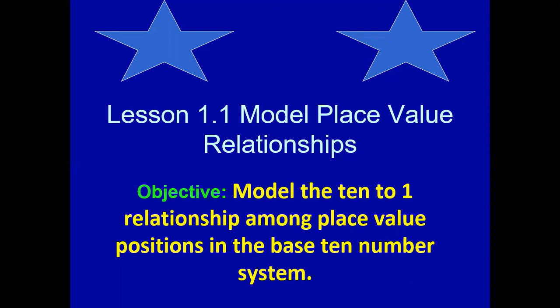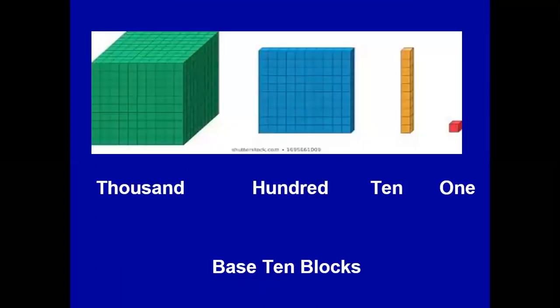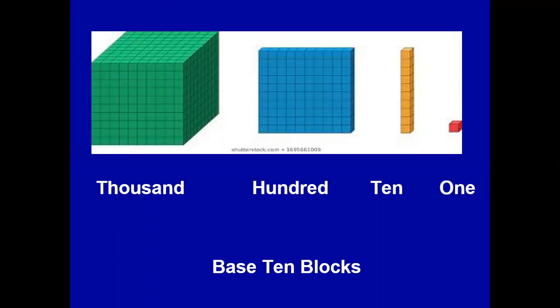First let me show you the base 10 blocks, which I have already shown you in class. The small cube represents one. The long yellow one is made up of 10 small cubes and represents 10. The blue flat is made up of 10 longs, and the green cube is made up of 10 flats. So the values are: 1, 10, 100, and 1000.